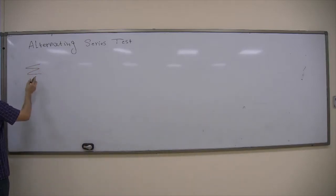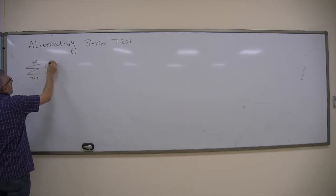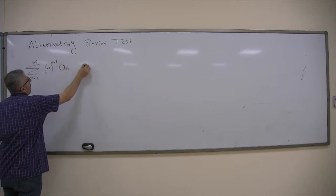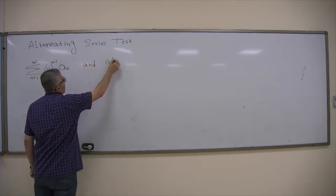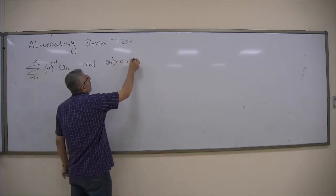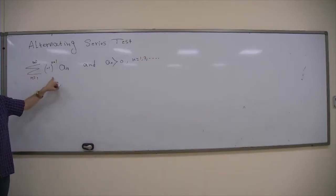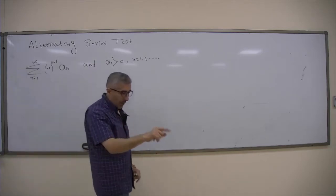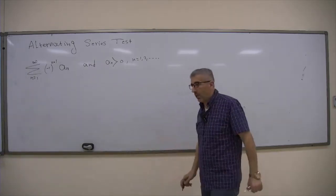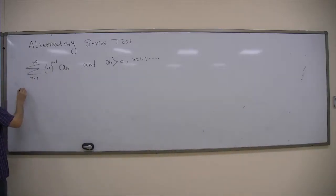If you have the summation from n equals 1 to infinity of (-1)^(n+1) · a_n, where a_n is positive for all n, then when you expand this, you see the sign alternates. It starts positive, then negative, then positive, then negative, and so on. Such a series is called an alternating series.